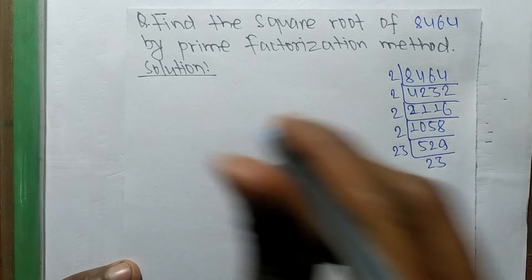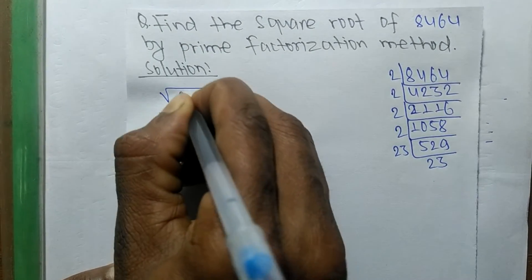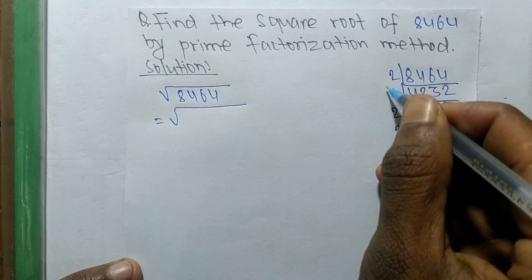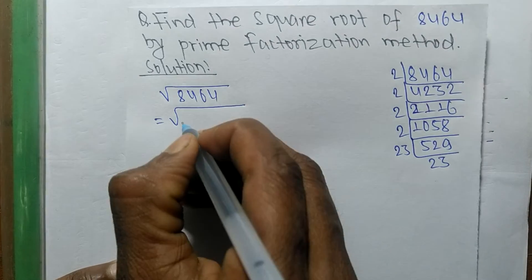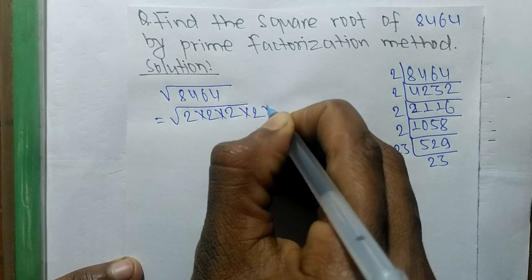Now to find the square root, the square root of 8464 is equal to... we write the product of all these prime factors: 2 into 2, 2 into 2, and 23 times 23.